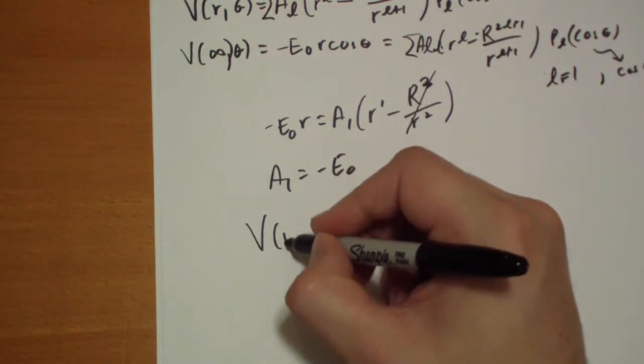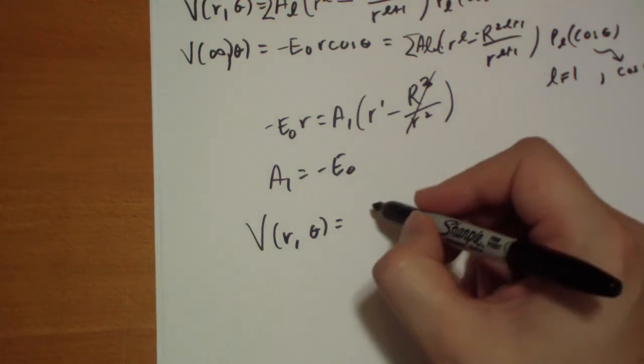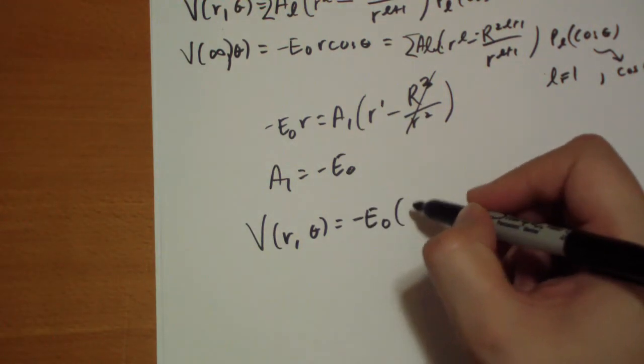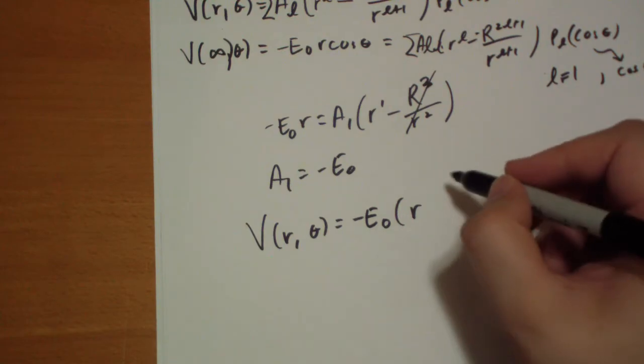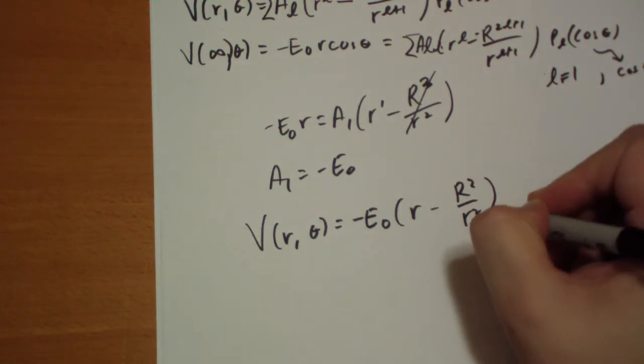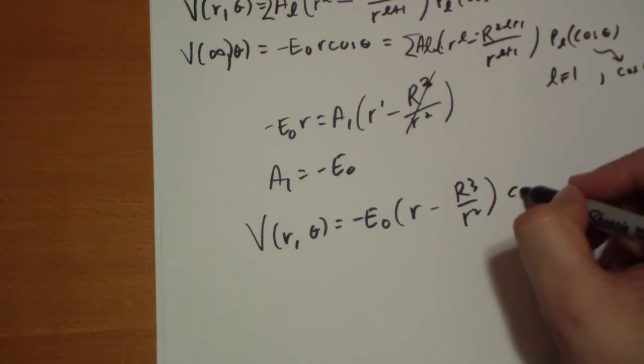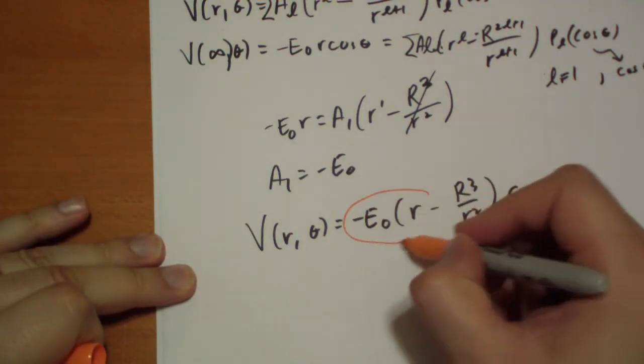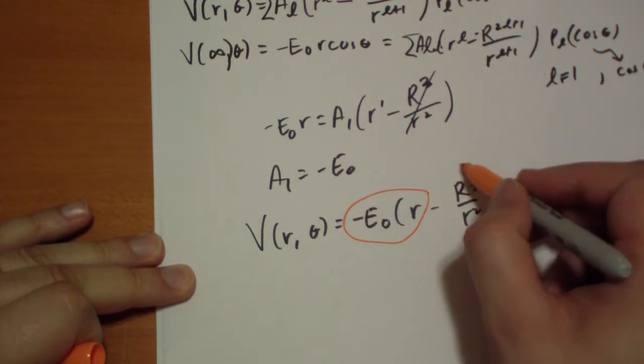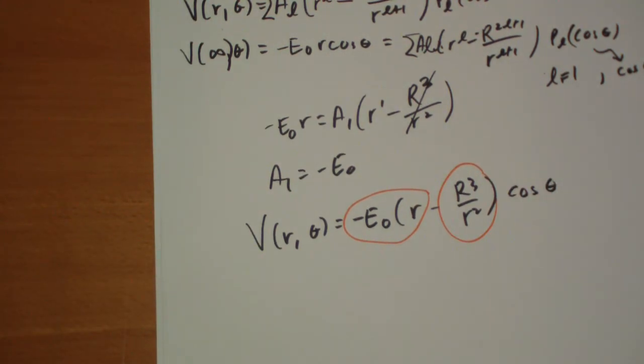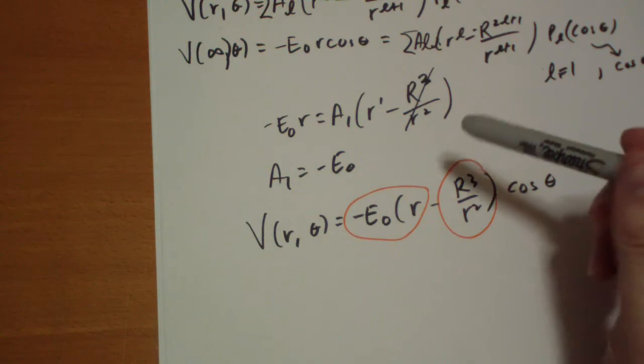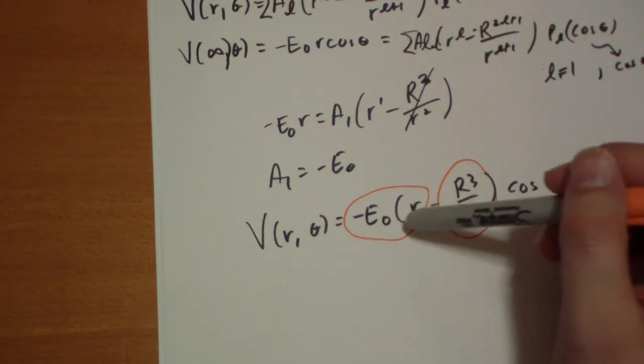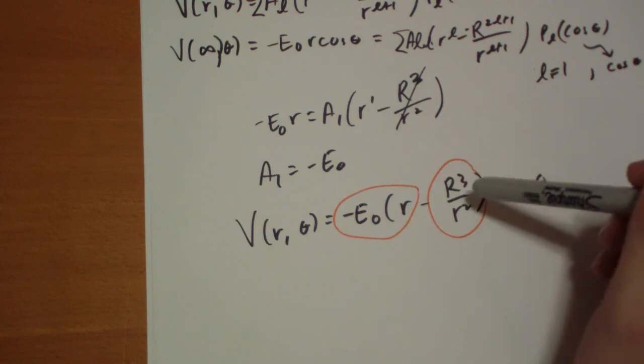Our solution is V of R theta is equal to negative E-naught times R minus R cubed over R squared times cos theta. Analyzing this, there's really two terms here. There's this E-naught R part, and there's this E-naught R cubed over R squared. This E-naught R part is really the potential due to the field that the conductor was put in, and this is the part the conductor actually causes.